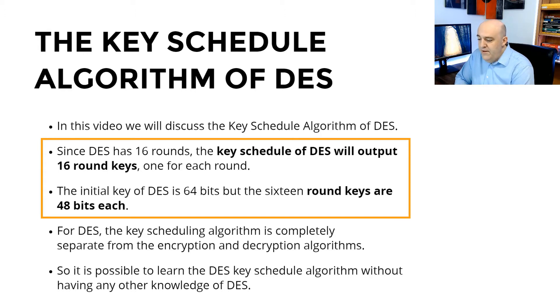We're going to take that initial key of 64-bits and produce 16 round keys, and they're going to be 48-bits each. So here's an example where the original key length is different than the round key lengths. And one point to be made is the Key Schedule algorithm of DES is completely separate from the encryption and decryption algorithms. So even if you're not familiar with the encryption and decryption algorithm of DES, you can still learn what the DES Key Schedule is independently of that.